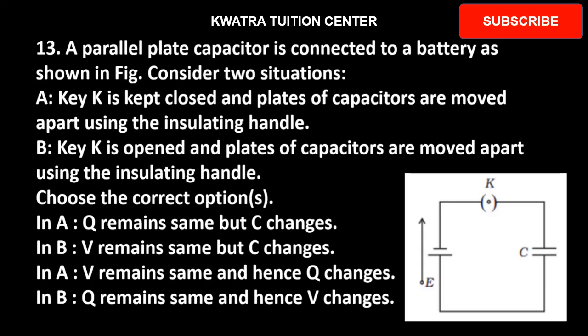So here first we say key K is kept closed and plates of capacitors are moved apart using the insulating handle. We are doing what? We are increasing the distance between the plates. So we have to see what changes will come. And this is closed, in the first condition it will start charging. So they will maintain a potential of E here as well.